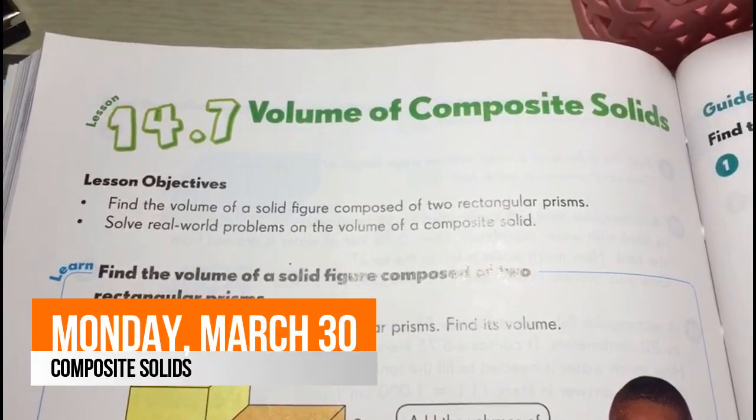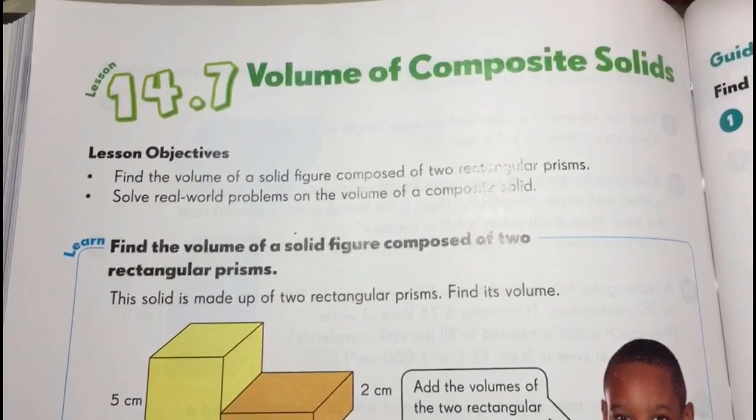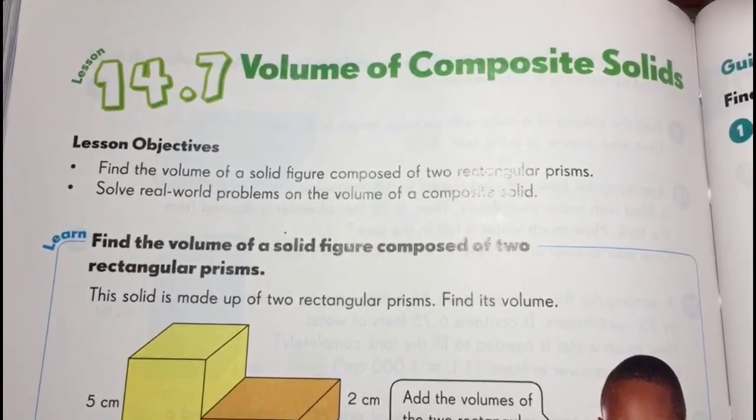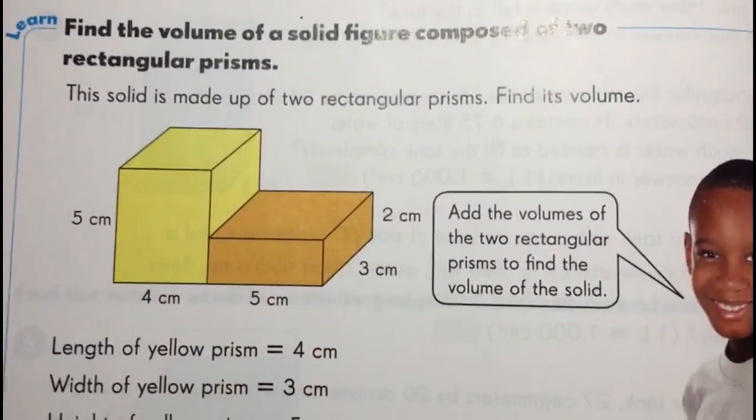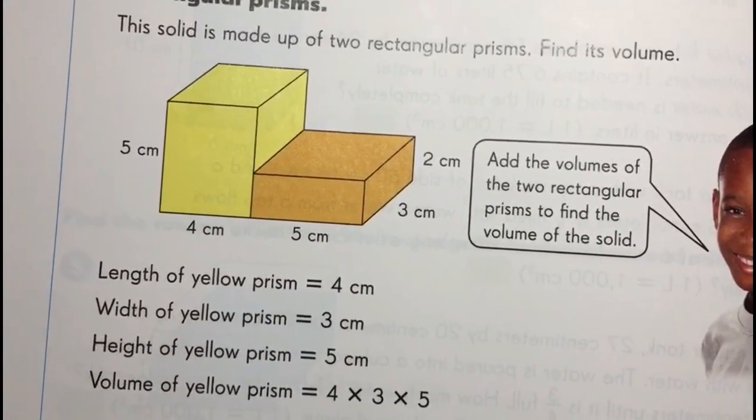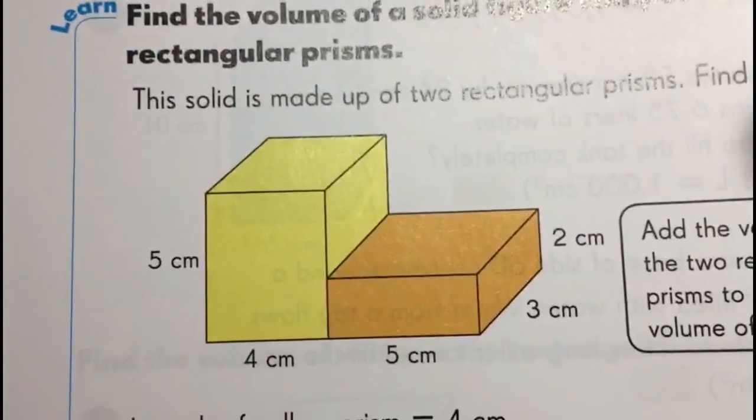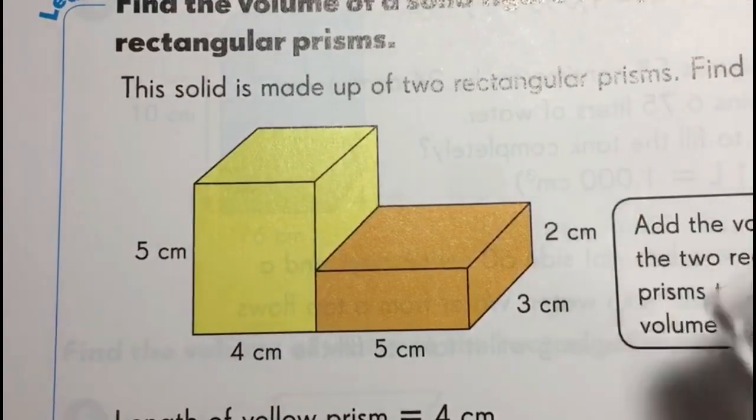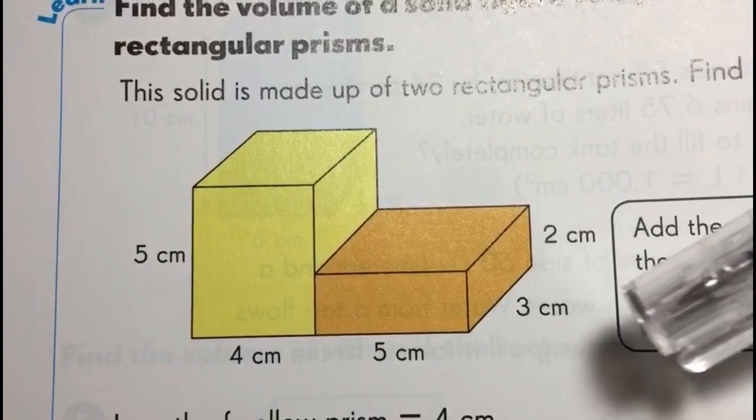The last lesson of this chapter and the last lesson of this book is the volume of composite solids. It's just two rectangular prisms put together, just like this. The key thing for solving questions like this is that sometimes they share one of the sides—it may be the width or the length. You just need to realize that and know that.